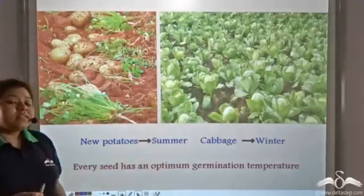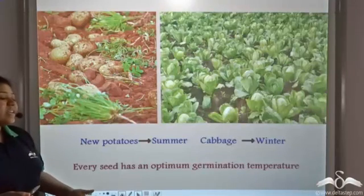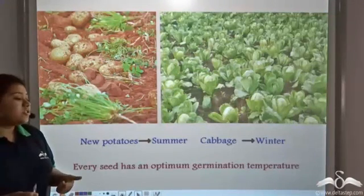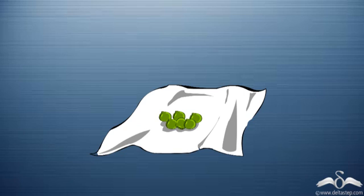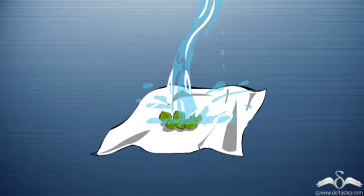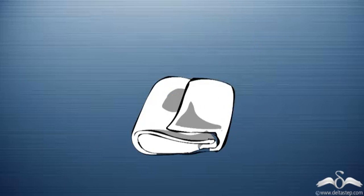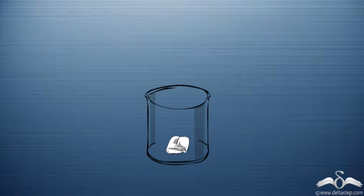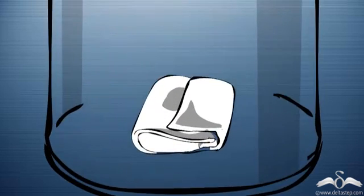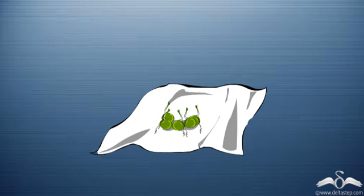Every seed has an optimum germination temperature. Let us again conduct two simple experiments. A few seeds were kept on a cloth and the seeds were watered. This cloth was kept in a jar for two days at room temperature. After two days, what we see is the seeds have germinated.